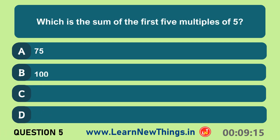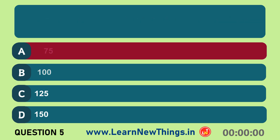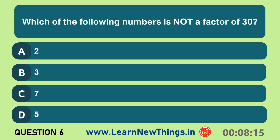Which is the sum of the first five multiples of five? Seventy-five. Which of the following numbers is not a factor of thirty? Seven.